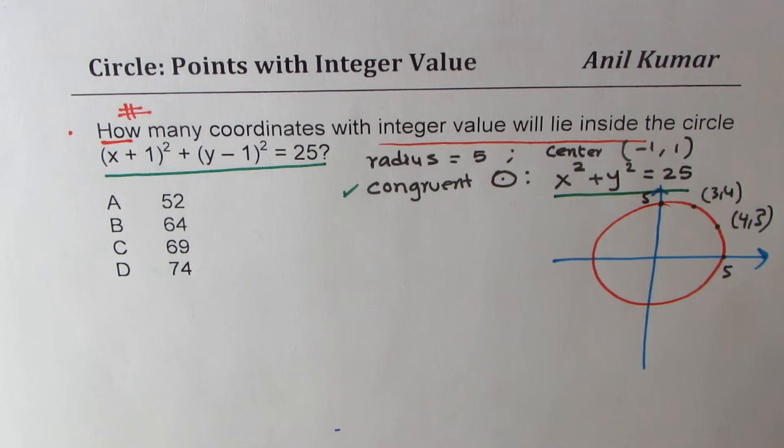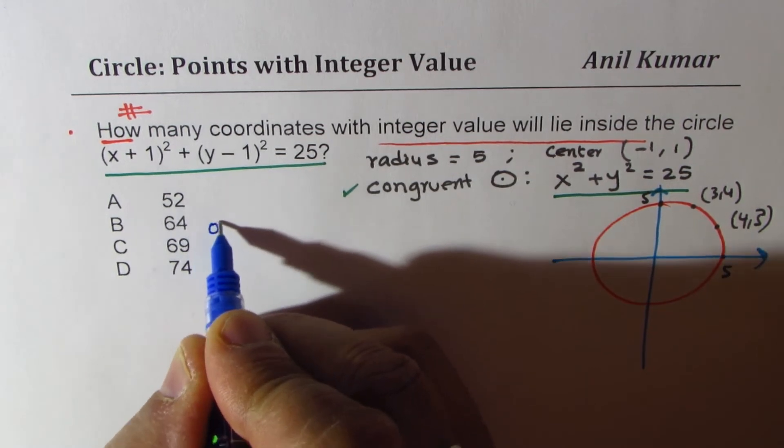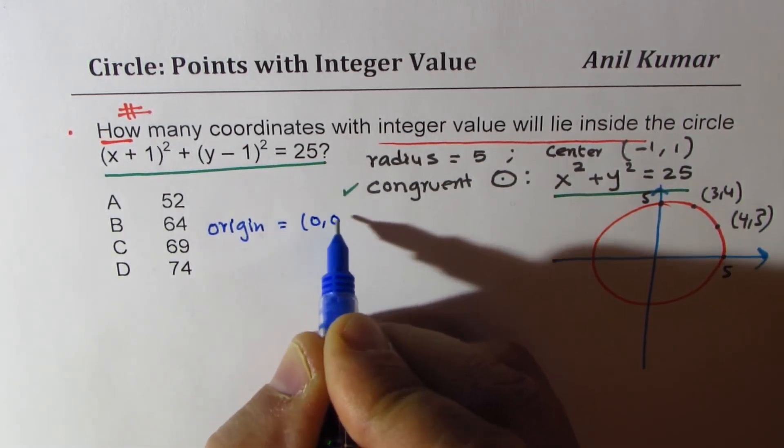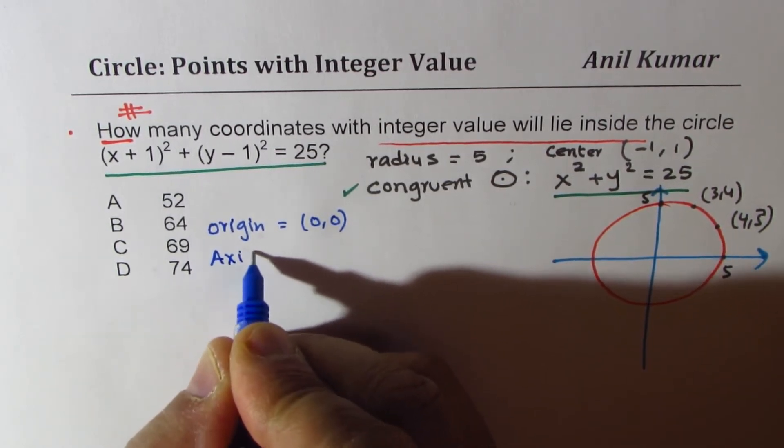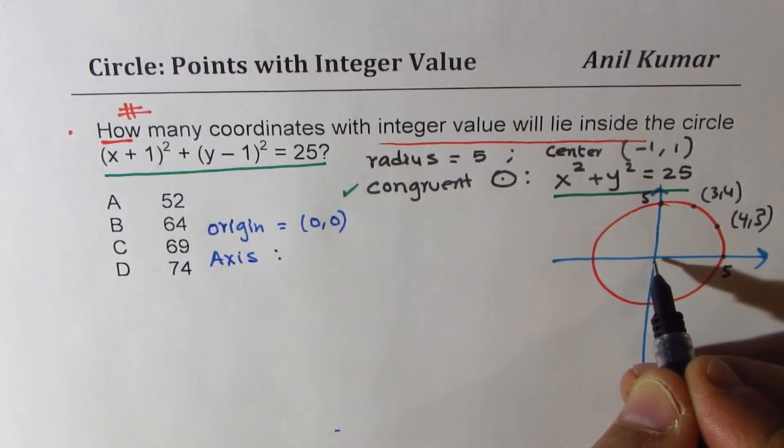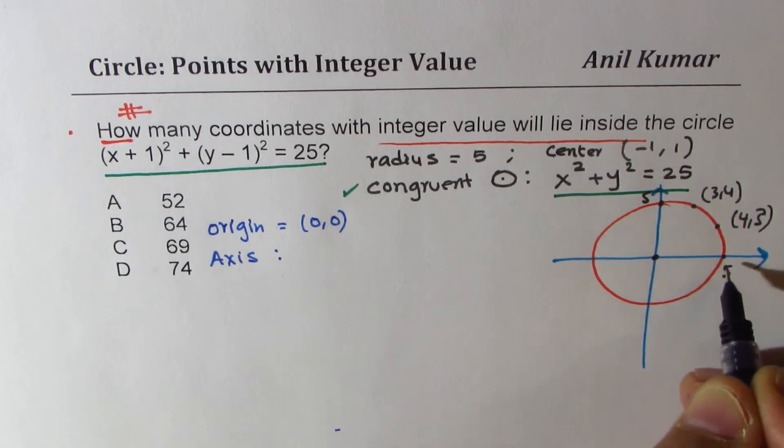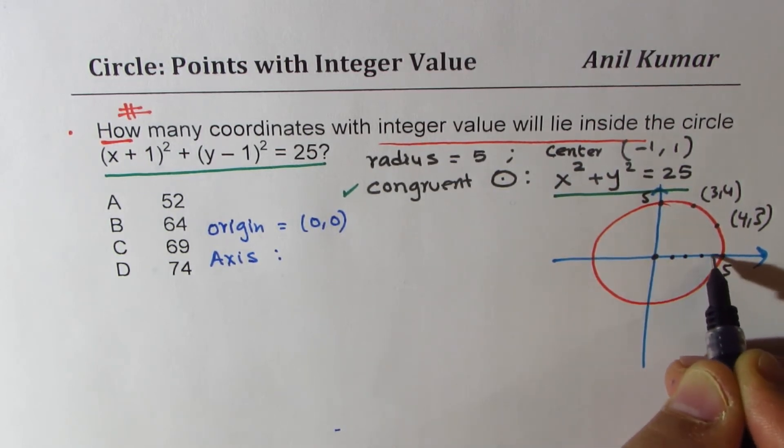Count rest of the points. So we can begin with origin itself. So one of the points is the origin, which is (0, 0). Then let's go to the axis. So on each axis, we'll have, so we have already taken this point, which is the origin.